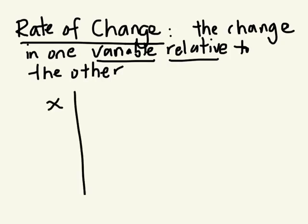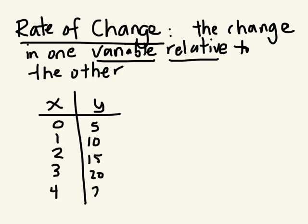So if I have a table and I just write 0, 1, 2, 3, 4 and 5, 10, 15, 20, 25, what's the rate of change? What are the first differences here?